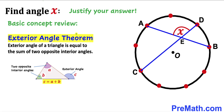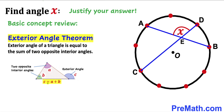Now let's go over the exterior angle theorem. The exterior angle of a triangle is equal to the sum of two opposite interior angles. As you can see in this diagram, this angle C is our exterior angle whereas these angles A and B are our opposite interior angles, such that angle C equals A plus B.